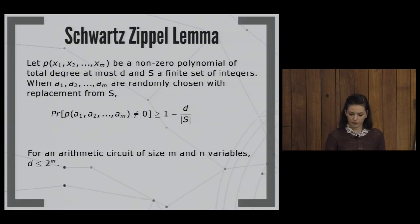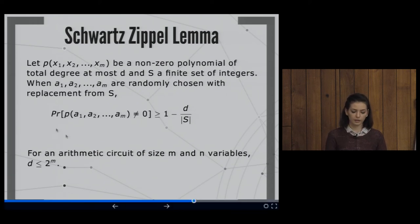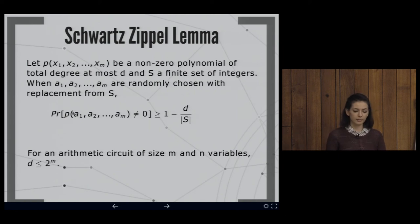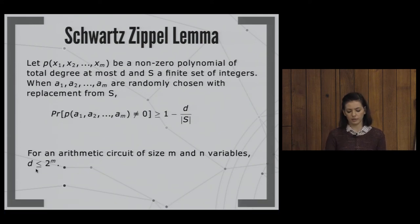We need a better solution to obtain polynomial time. We have the Schwartz-Zippel lemma: for a polynomial p of total degree at most d, if we pick values for x_1, ..., x_m uniformly at random with replacement from a finite set S of integers, then the probability that the polynomial evaluates to something different from zero is bounded below by a certain expression. We can bound the degree of the polynomial by the size of the arithmetic circuit, and this lemma is very important and widely used.